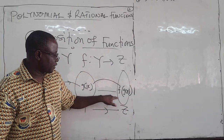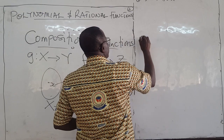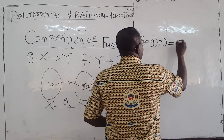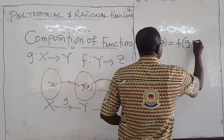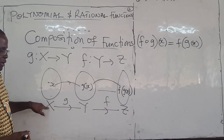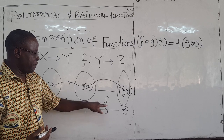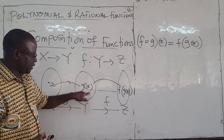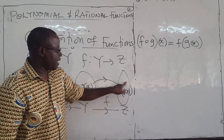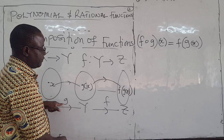So this final result is called the composition of F and G, written as F of G of X. G takes X from its domain and gives you G of X in its range. F picks elements from the range of G and gives you F of G of X. This final result is the composition of the functions F and G.